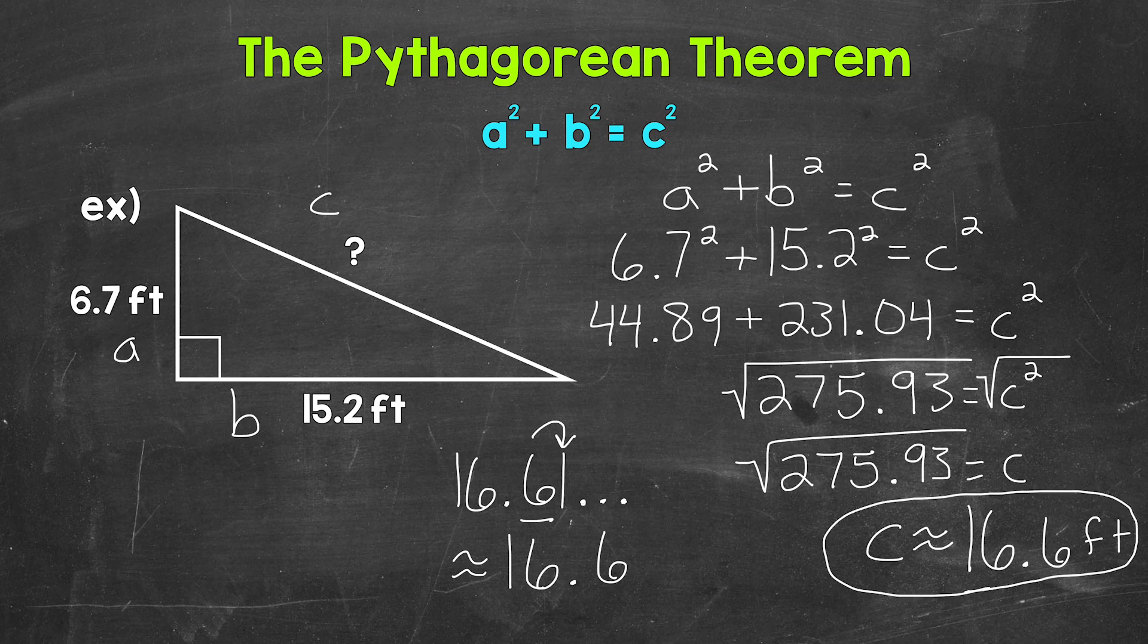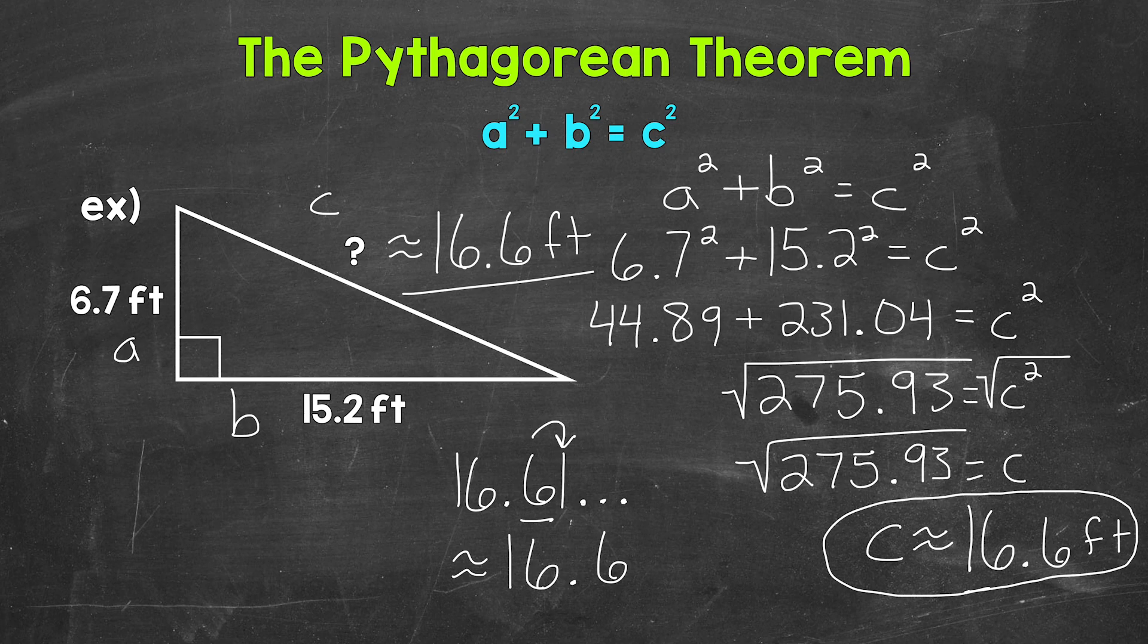The hypotenuse, the unknown or missing side length of this right triangle, is approximately 16.6 feet. So there you have it. That's how to use the Pythagorean theorem in order to find an unknown or missing side length. And specifically in this example, we needed to find the length of the hypotenuse.